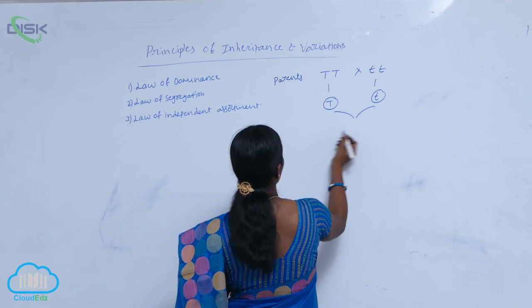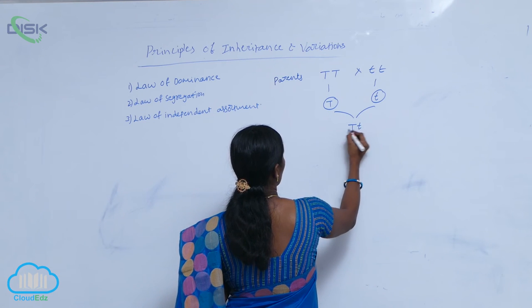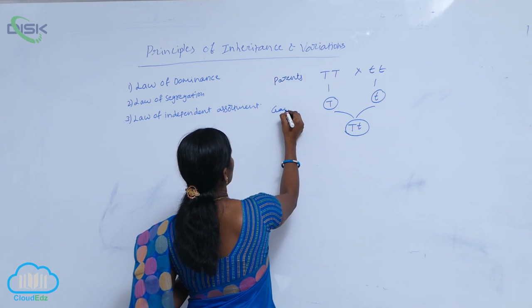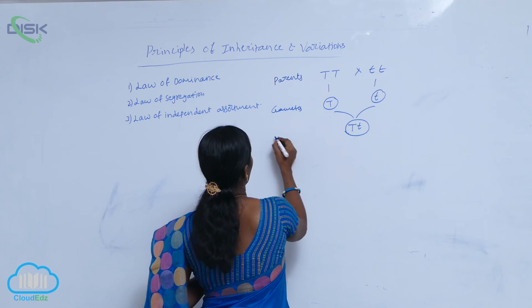So, here the heterozygote is produced, that is capital T, small t. So, gametes and F1 generation.